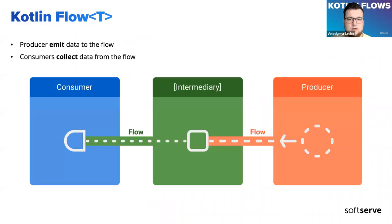A flow is a type that can emit multiple values. As you know, a suspend function can return only a single value, but a flow can emit multiple values sequentially. For example, you can use a flow to receive live updates from a database. Flows are built on top of coroutines and can provide multiple values — it is conceptually a stream of data that can be computed asynchronously. The emitted values must be the same type; for example, if you have a flow of integers, you can only emit integers.